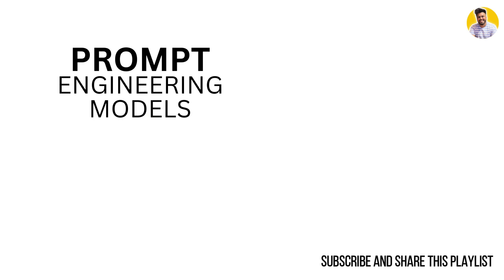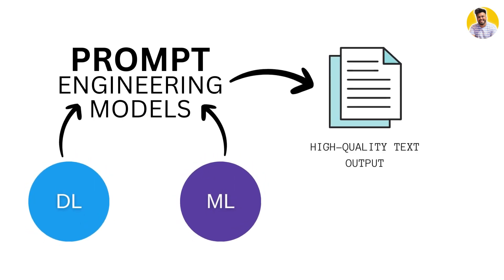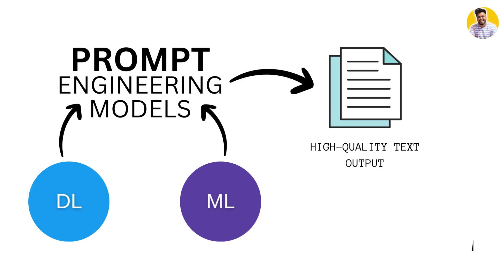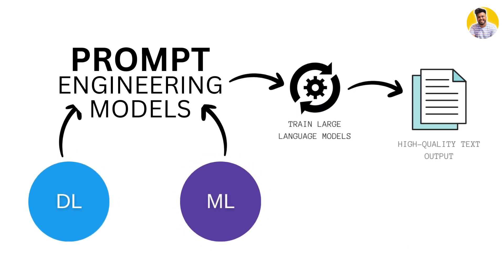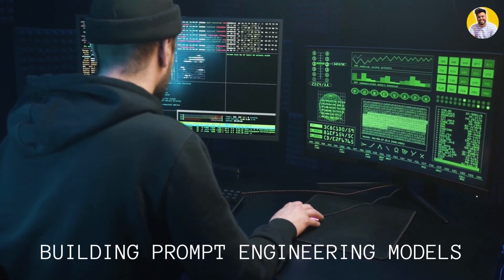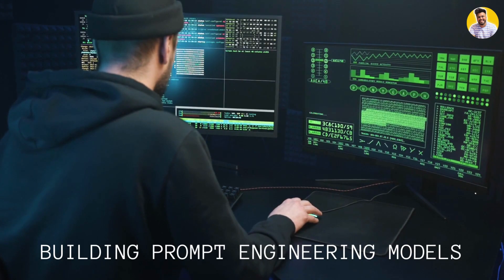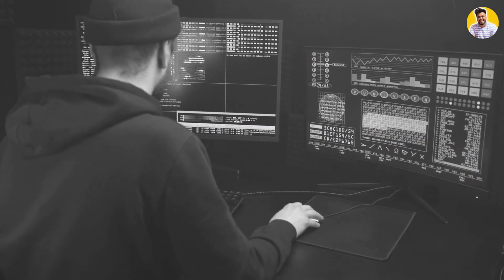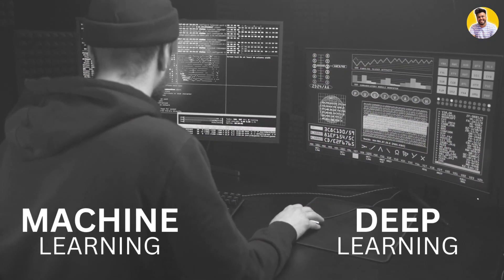First, let me introduce you to building prompt engineering models. Prompt engineering is an exciting field that relies on machine learning and deep learning techniques to generate high quality text outputs. Building a prompt engineering model involves training a large language model to generate text outputs tailored to specific prompts. Before we dive into the specifics, let's review some basics of machine learning and deep learning.